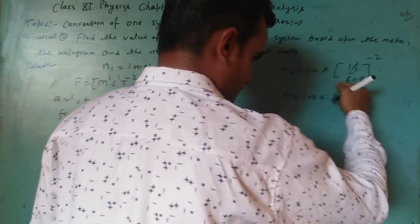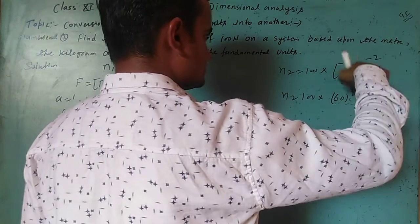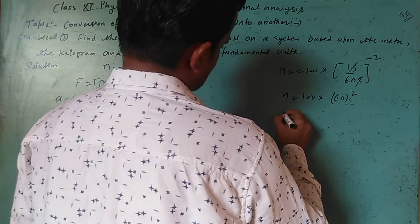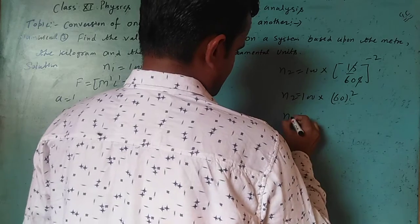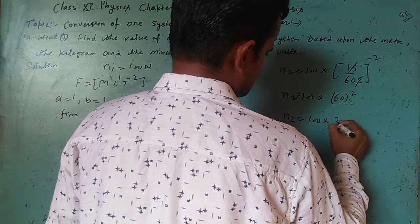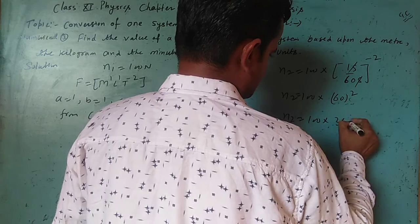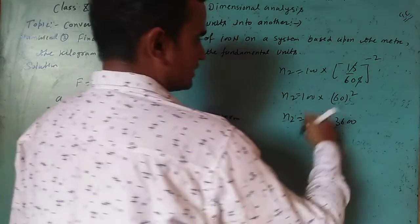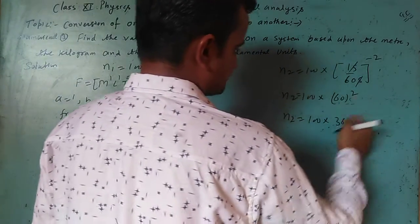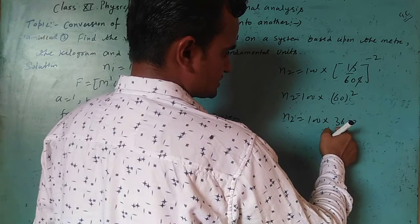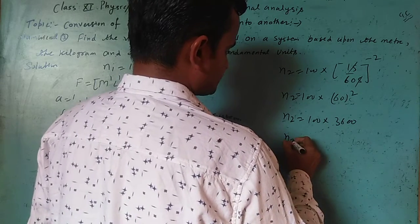60² = 3600. So n2 = 100 × 3600 = 36,000, which equals 3.6 × 10^4